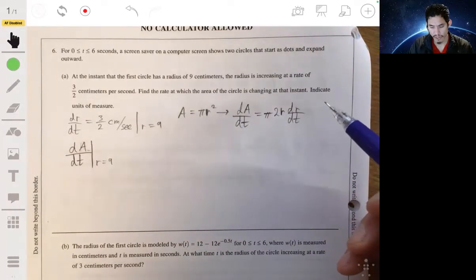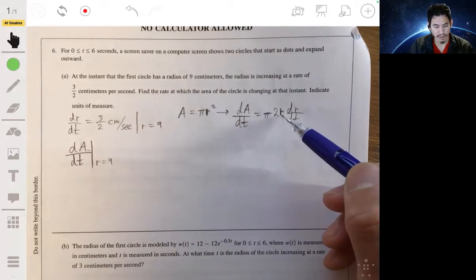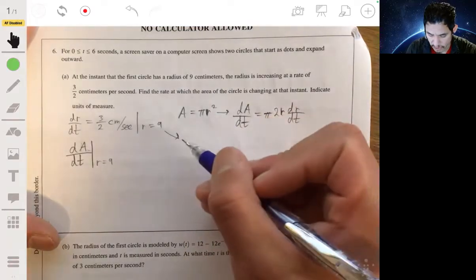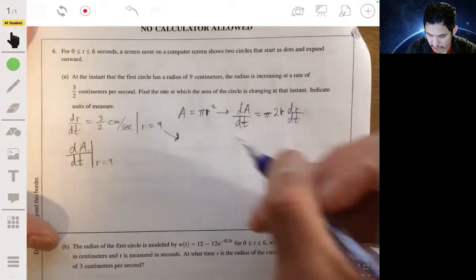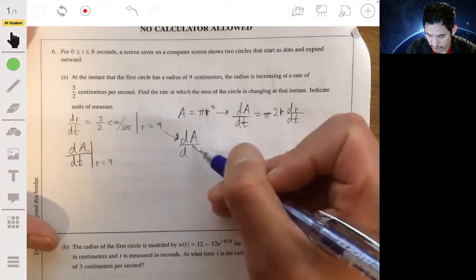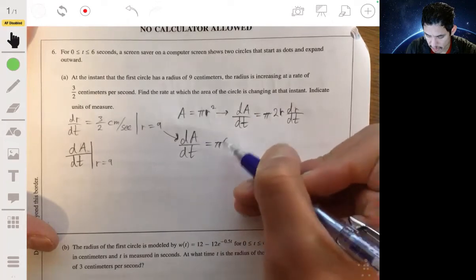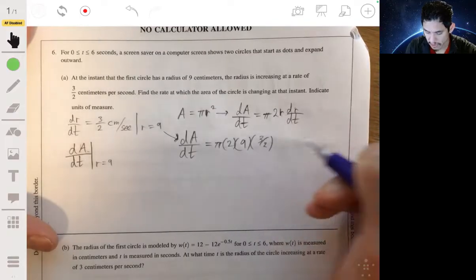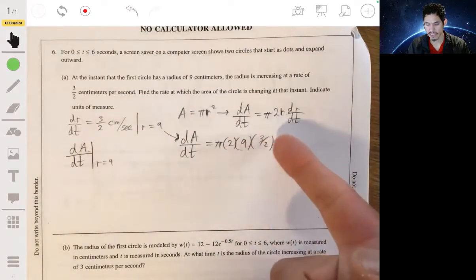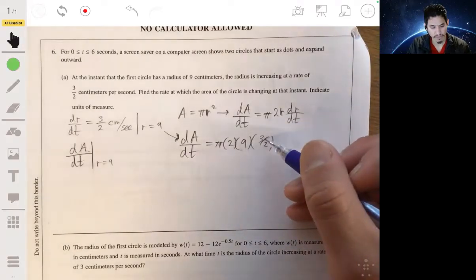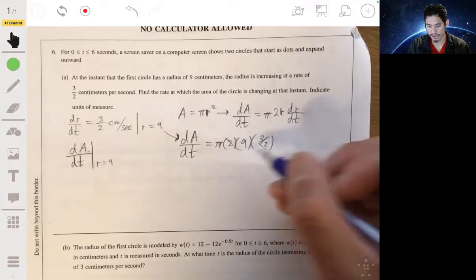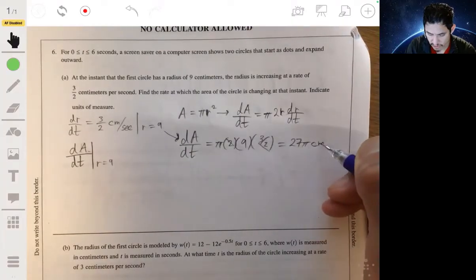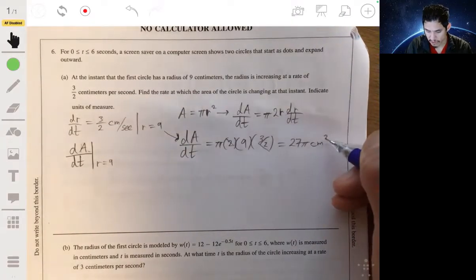So we know what dr/dt is, and we know what the r is. So we've got to simply plug those in because we're given that. And so, dA/dt is equal to π times 2r is nine, dr/dt is three halves, and then we get 18 times 3, 54, these two will cancel, 27π centimeters squared per second, since we're talking about area.